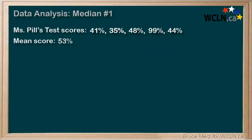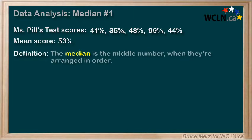So what's another way we could come up with a meaningful number for the average? Well, we could calculate what's called the median. It's great for situations that have outliers like the 99%, and is often a better representative of a typical value. Here's the definition: the median is the middle number when they're arranged in order.